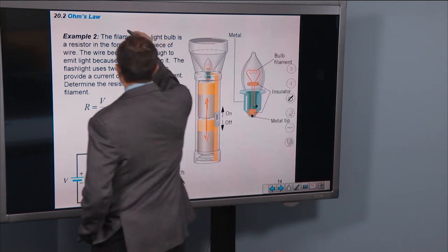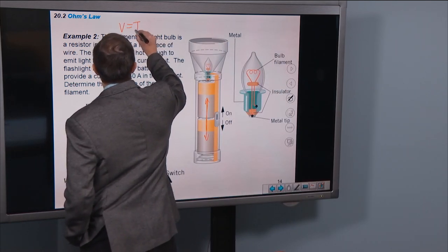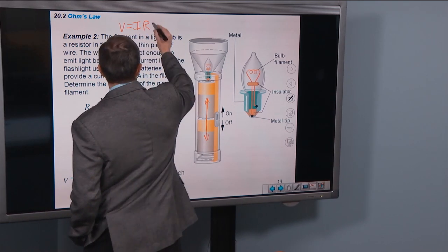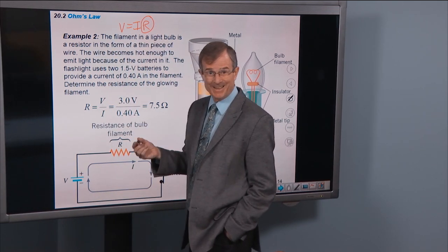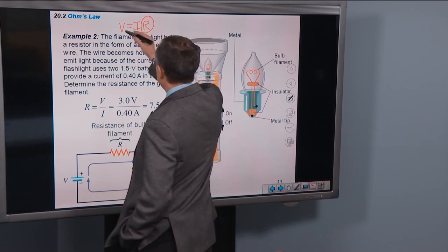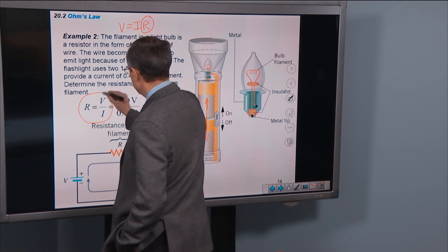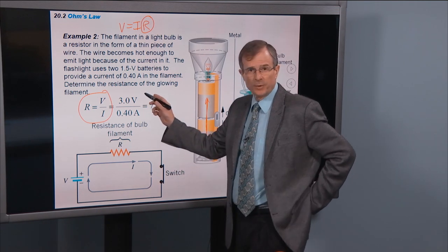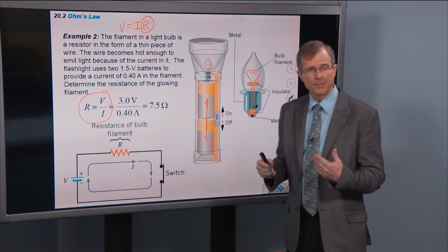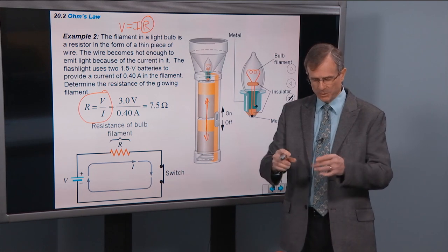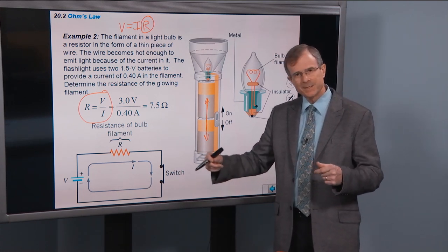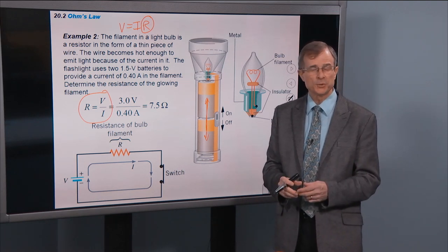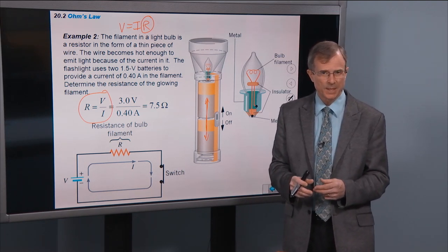Well, we know that V equals IR. We can solve that for R by dividing both sides by I, so R will be V over I, that's this equation here. V is going to be 3 volts. Why is that? Just like in the demo video, we put those one and a half volts end-to-end, six of them, to create a nine-volt battery. Well, if you just put two one and a half volt batteries end-to-end, you get three volts.